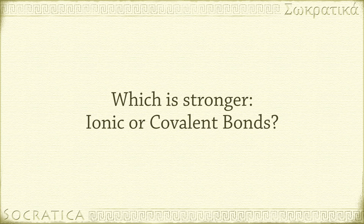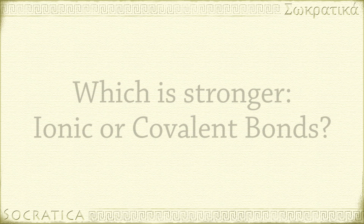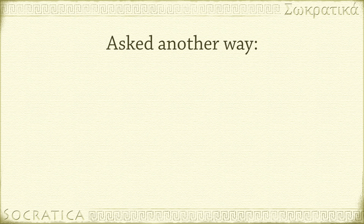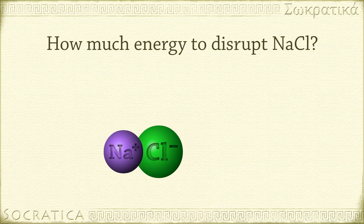Do we know which is stronger — ionic or covalent bonds? It seems a simple question, but there is not one simple answer. One way we might determine the strength of a bond is by measuring how much energy is required to disrupt it. NaCl, our example of an ionic bond, doesn't usually exist as a compound of just one sodium ion and one chloride ion — what we call a formula unit.